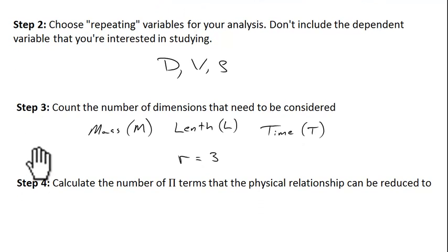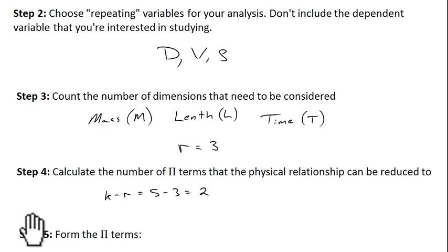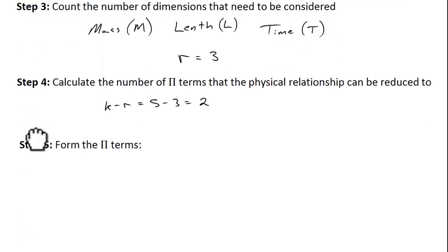Step four is to calculate the number of pi terms that these relationships could be reduced to. The Buckingham Pi Theorem says the number of pi terms is k minus r — in this case five minus three — and that equals two. What we'll find is that the first pi term is the Reynolds number, and the second pi term is the coefficient of drag.